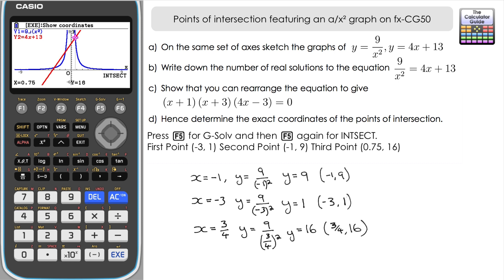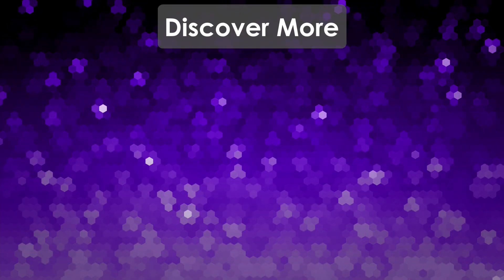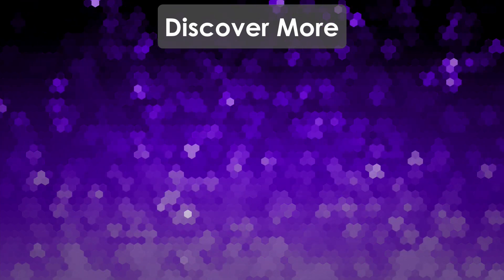The final coordinate is (three quarters, 16) or (0.75, 16). So the CG50 not only gives us answers to support our working, but also helps with drawing sketches, understanding graph behaviour, and identifying asymptotes at x equals 0 and on the x-axis. For part d we obtained the solutions from the intersection points, then tied them back to part c because of the word 'hence'. The CG50 provides that extra verification that our working is correct. That's it for this video — thank you for watching, see you next time on the Calculator Guide.